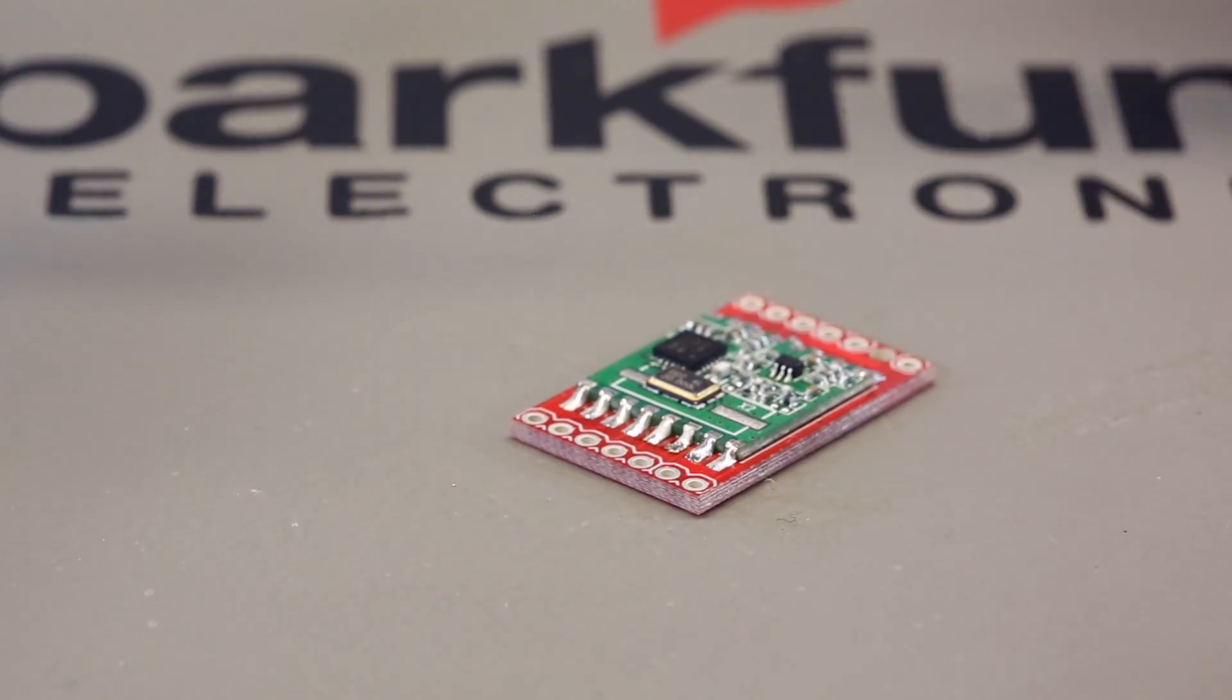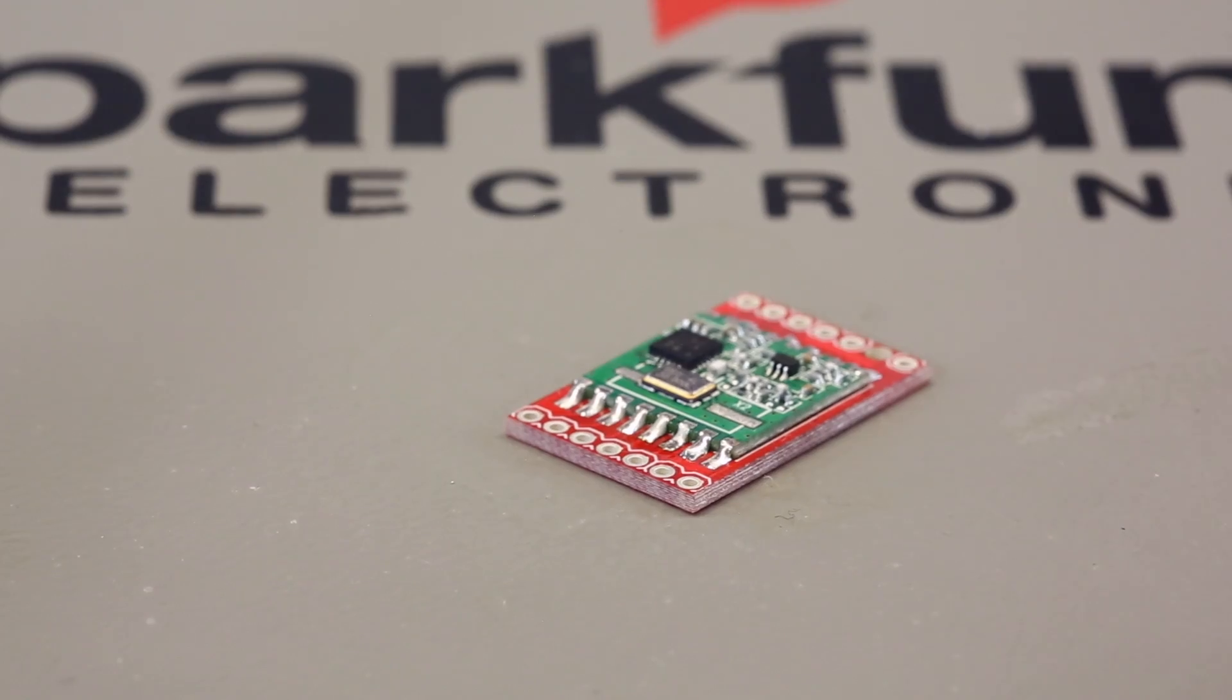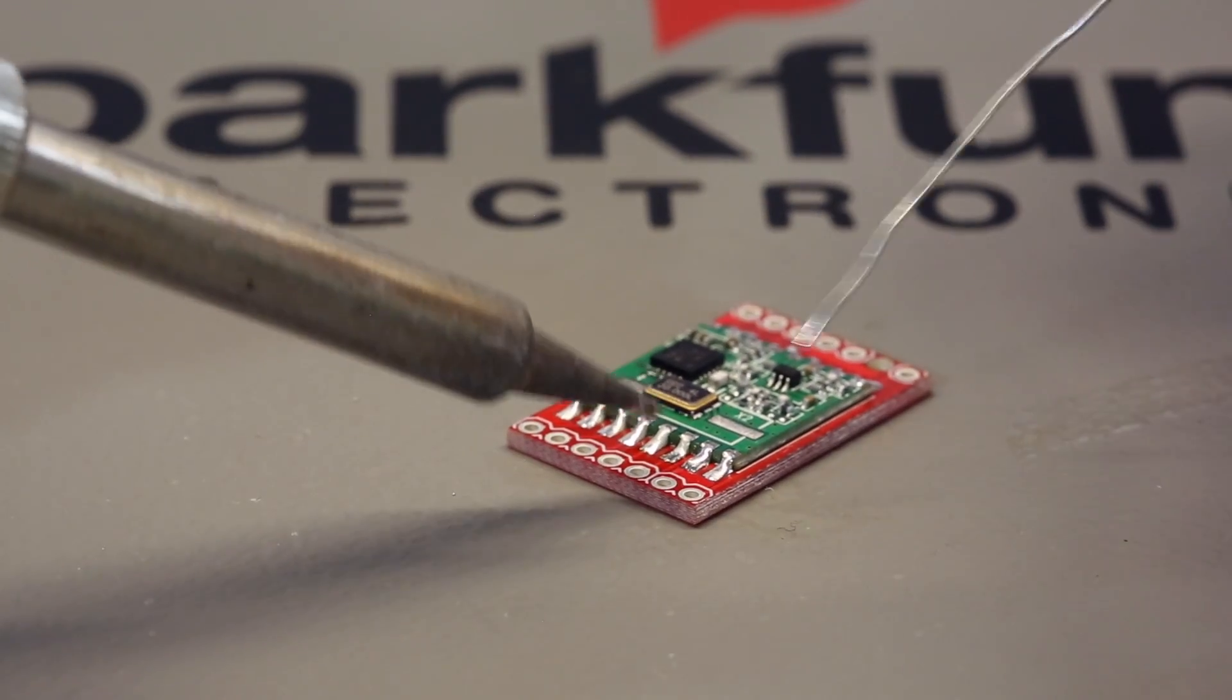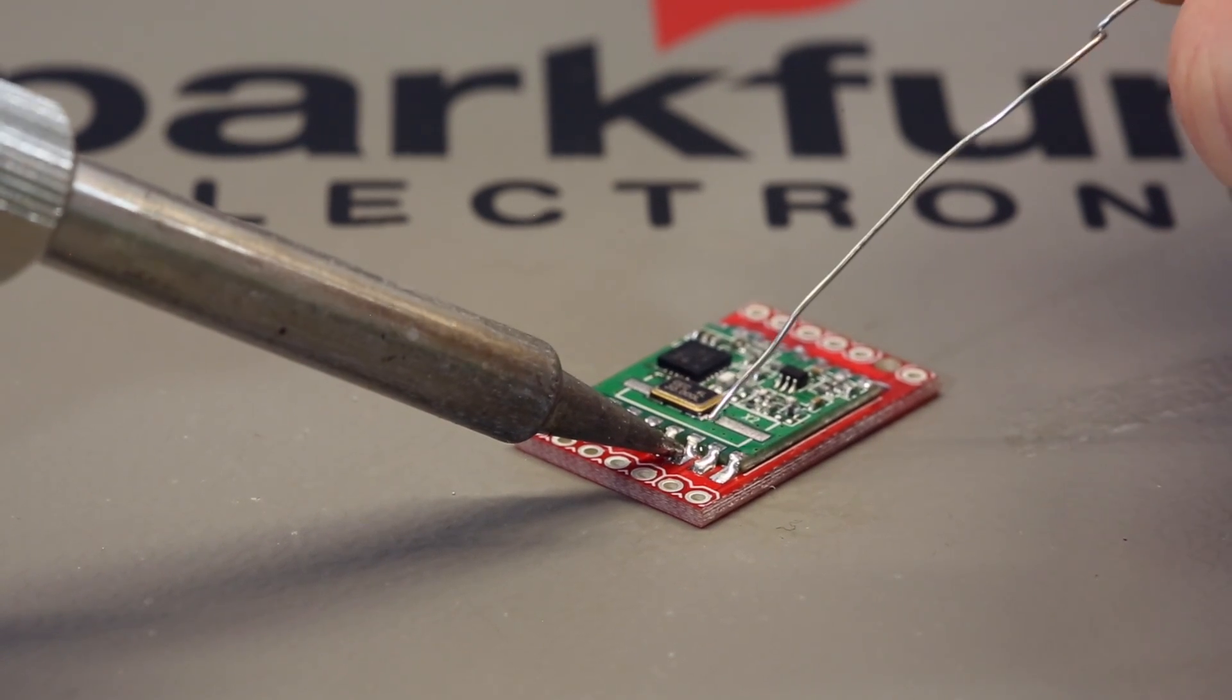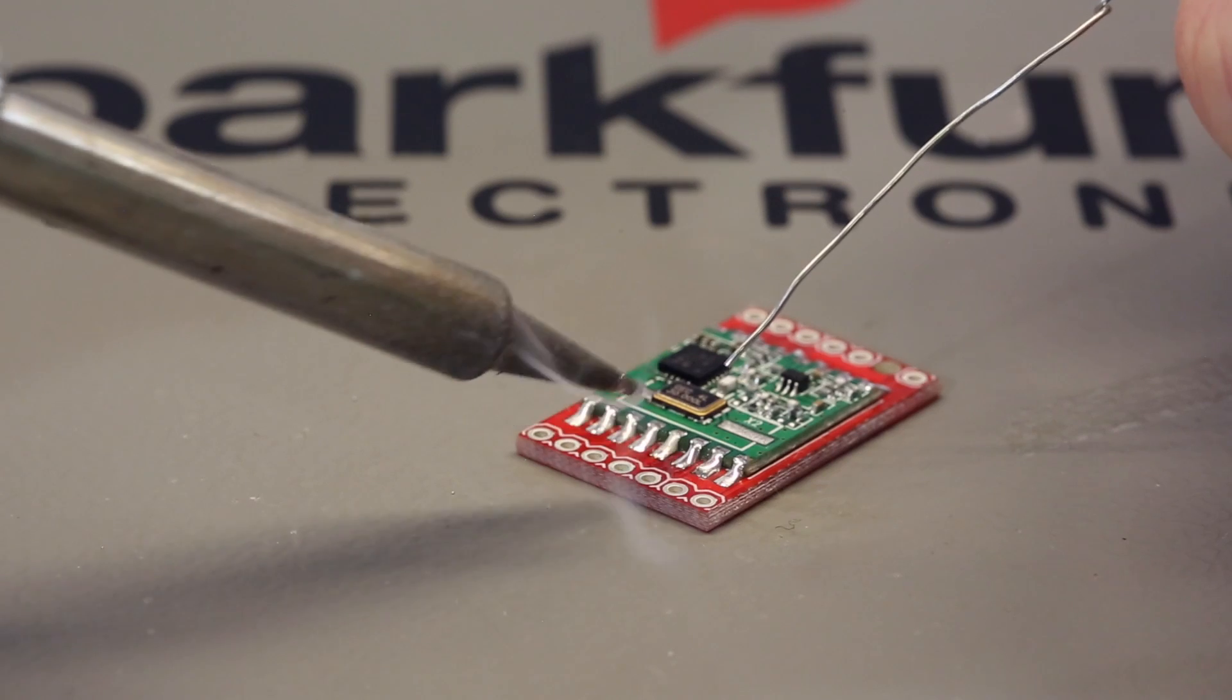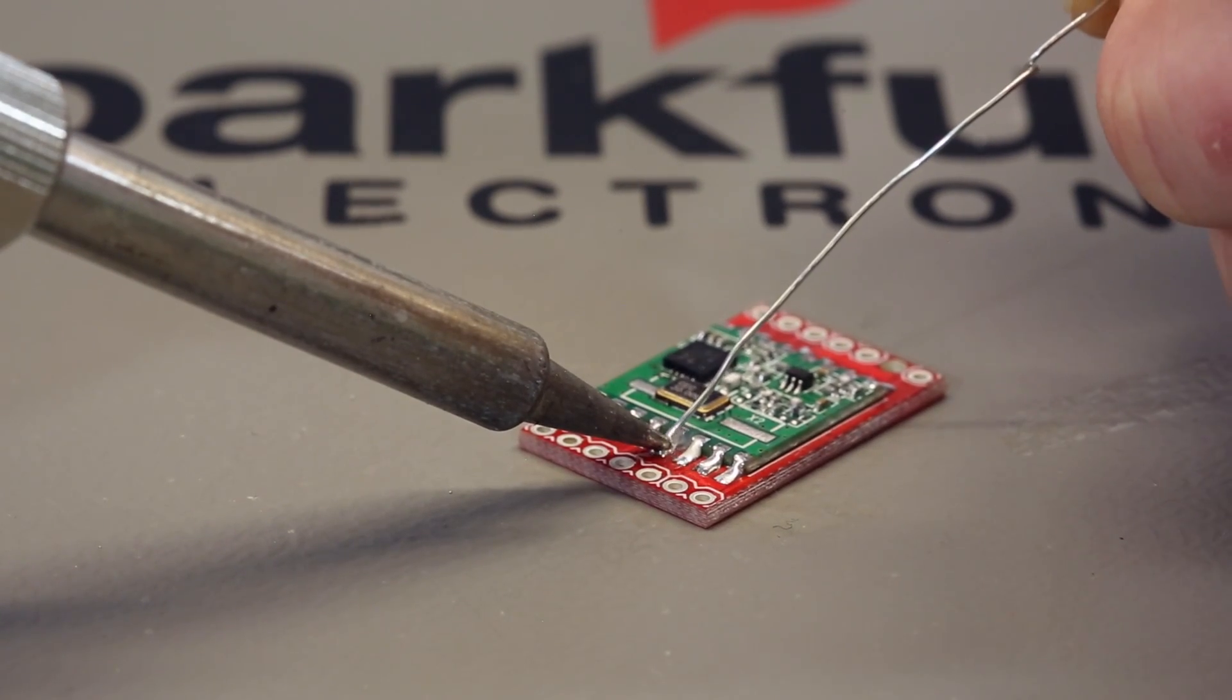If you notice that you took up too much solder on accident, you might want to redo those pins. To do that, I recommend always fluxing first if you have to re-melt solder. Take some of your solder and your iron, heat the pin until the solder melts, and apply a little extra solder. Do that for both of the pins, or any pin that you took too much solder out of.